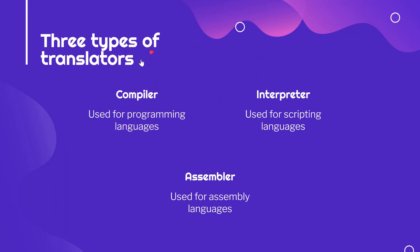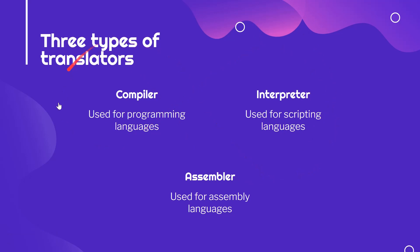A compiler and an interpreter are the two types of translators that most programming languages use. When you're programming as an enthusiast or learner, you don't have to worry much about which type your language uses, though it becomes important when you want to deploy an app. For now, all you have to remember is that compilers and interpreters translate from computer languages to binary. You might be wondering: a compiler and interpreter do the same thing, so how are they different?